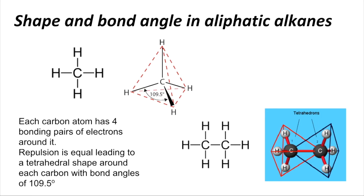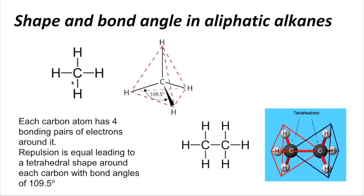That tetrahedral shape arises because each carbon has four bonding pairs of electrons around it. Looking at the carbon in methane, we've got a pair of electrons in each of these covalent bonds, so they all repel each other equally. That gives you the tetrahedral shape and the bond angle of 109.5 degrees.